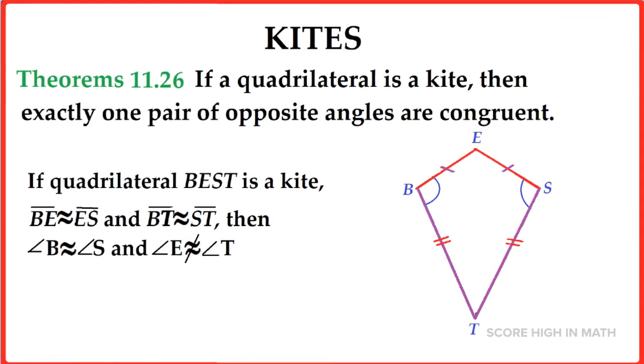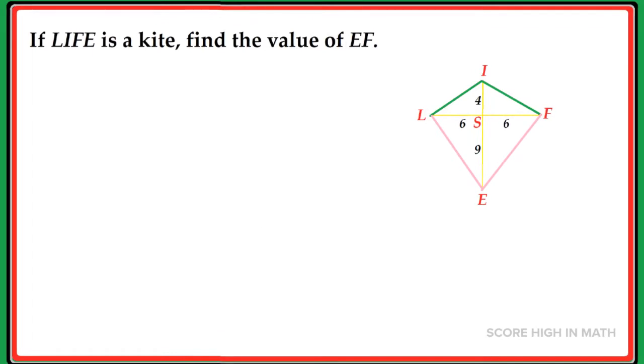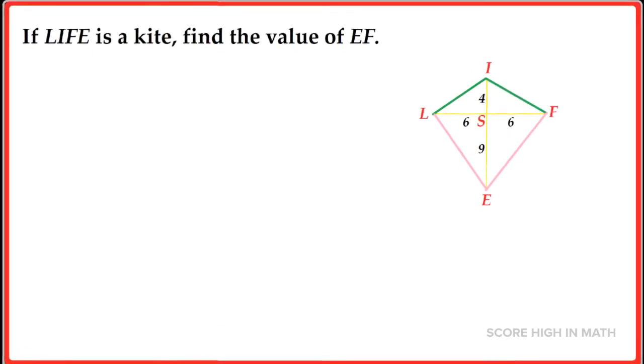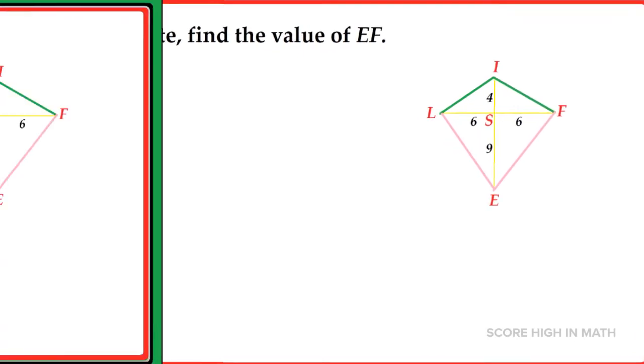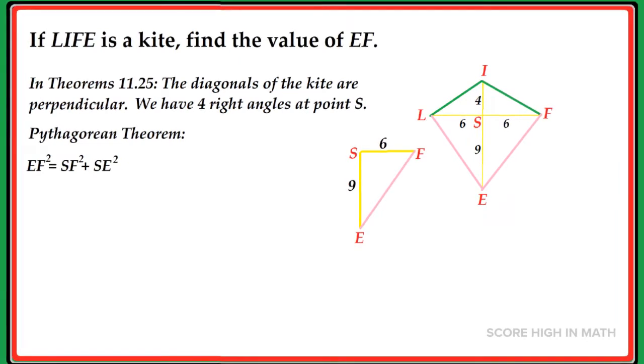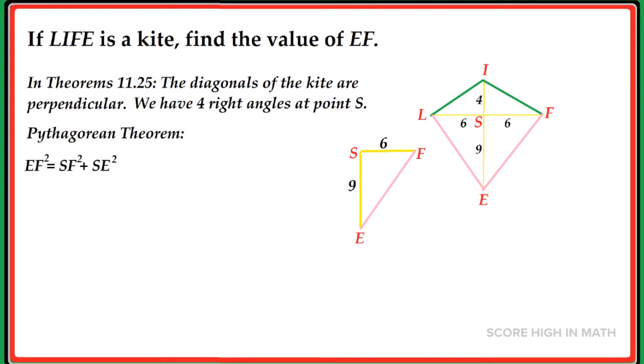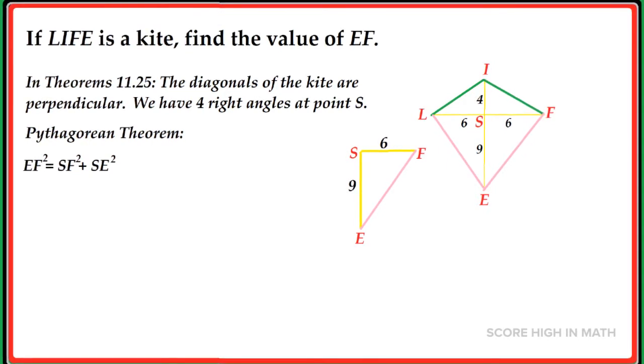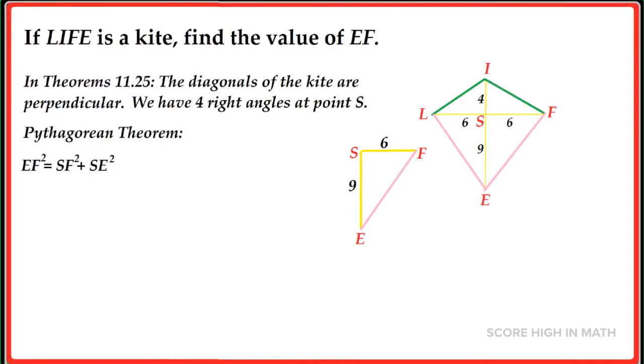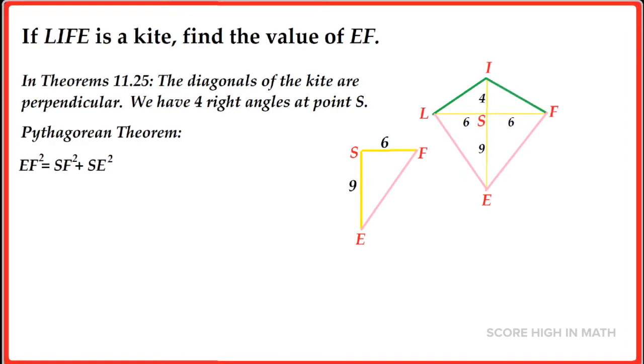Let us work on this example. If LIFE is a kite, find the value of EF. In Theorem 11.25, the diagonals of the kite are perpendicular. We have four right angles at point S, and we have one triangle which we can solve for the value of line segment EF. The two line segments have values, so we can use the Pythagorean theorem.